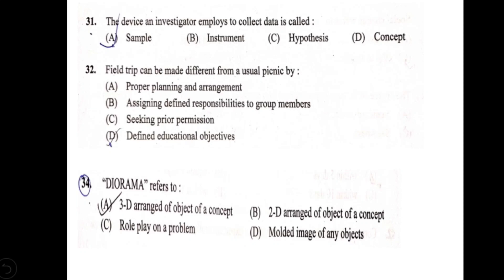The device an investigator employs to collect data is called — options: sample, instrument, hypothesis, and concept. The answer is instrument. Next question: a field trip can be made different from a usual picnic by — A) proper planning and arrangement; B) assigning defined responsibilities to group members; C) seeking prior permission; D) defined educational objectives. The correct answer is D, defined educational objectives.